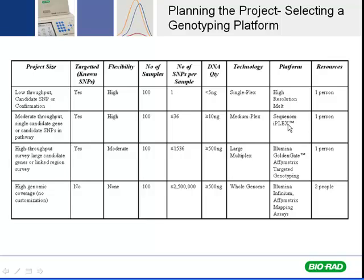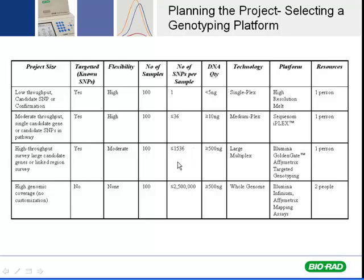If you start to get into higher amounts of SNPs per sample — say you want to screen all the known SNPs in a particular gene or set of genes, well above 10 to 15 SNPs — then you'd want to switch to the Sequenom platform. There are service facilities you can send samples to for analysis. For a reasonable number of samples but larger numbers of SNPs, Sequenom would probably be the way to go next, and these platforms also have different requirements for sample input.